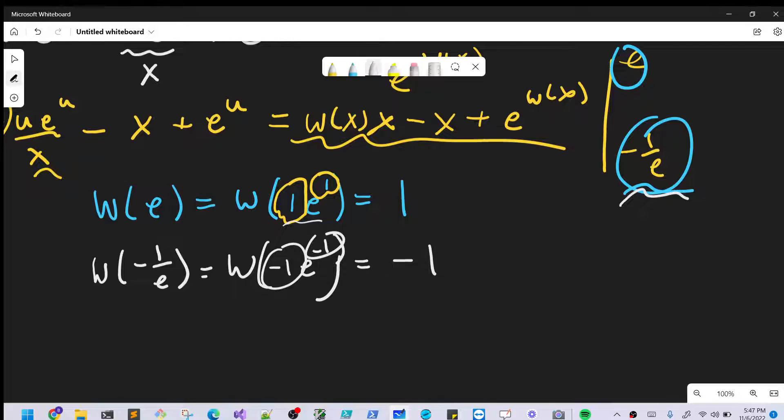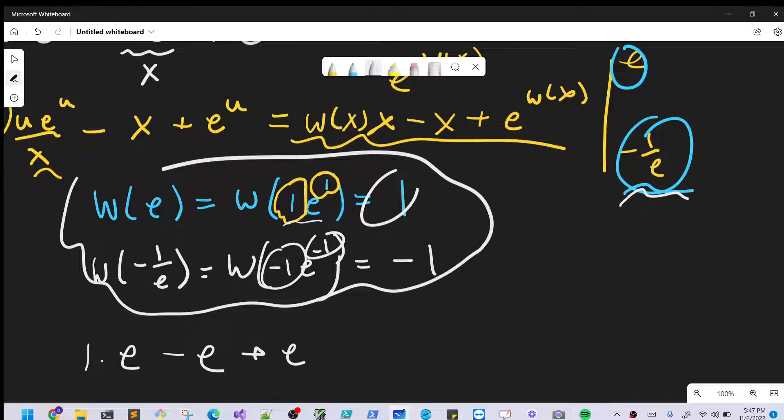So this is going to be helpful when we do, when we plug in our limits of integration, we get this information. Let's just do this now. So now we plug in our e into Lambert W, and so we know this is going to be 1. So we're going to have 1 times x, which is e, minus x, which is e again, plus e. Lambert W of e again is 1. So e to the 1 is just e.